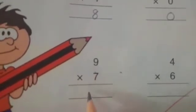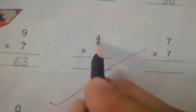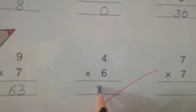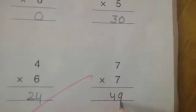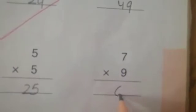6 multiply by 5 — 6 5s are 30. 9 multiply by 7 — 9 7s are 63. 4 multiply by 6 — 4 6s are 24. 7 7s are 49. 0 multiply by 4 — 0. 5 5s are 25. 7 9s are 63.